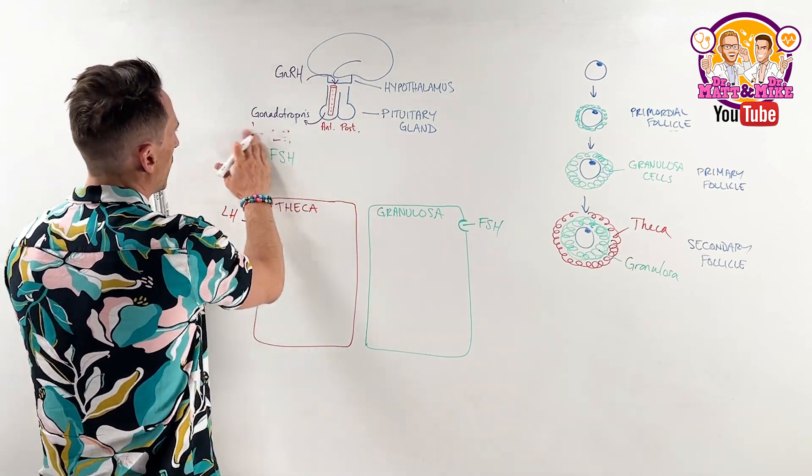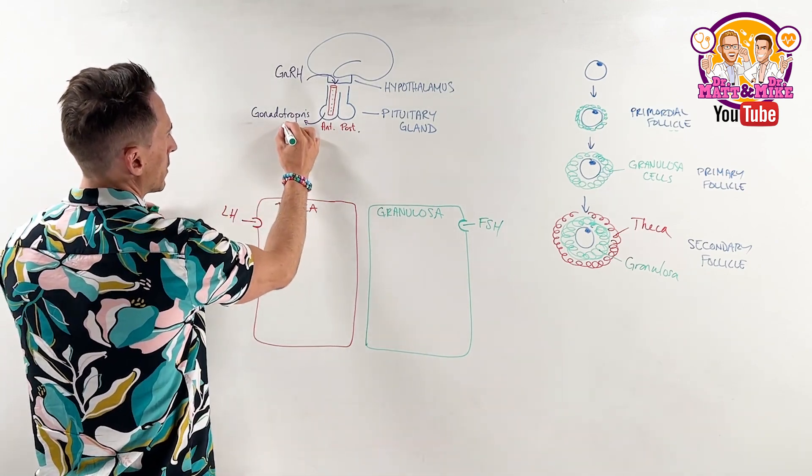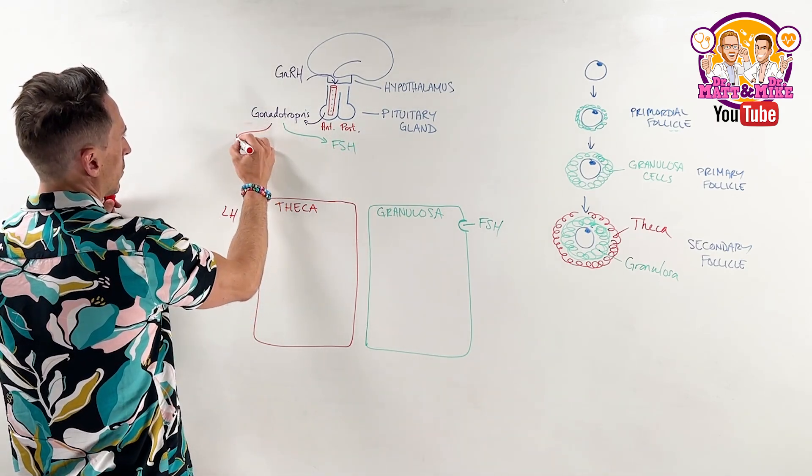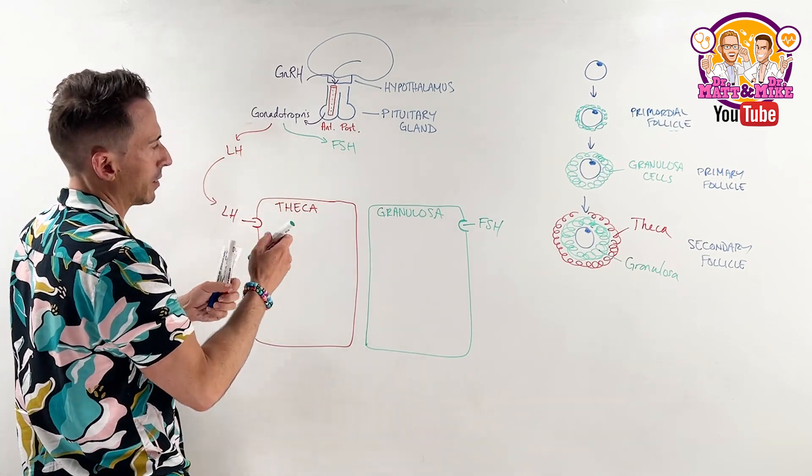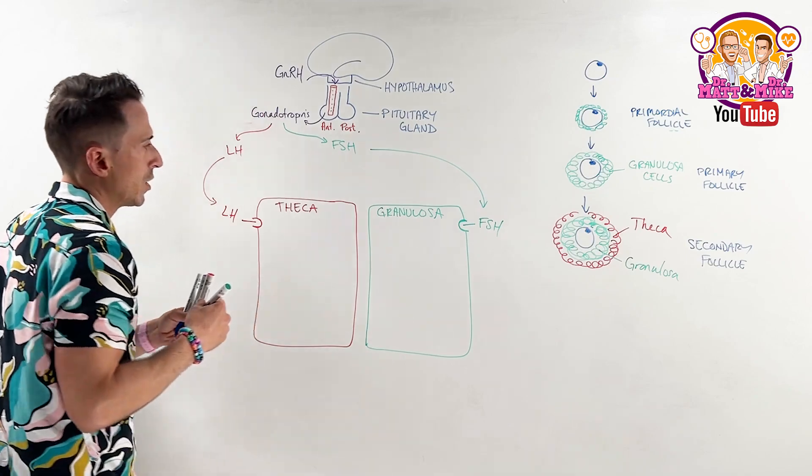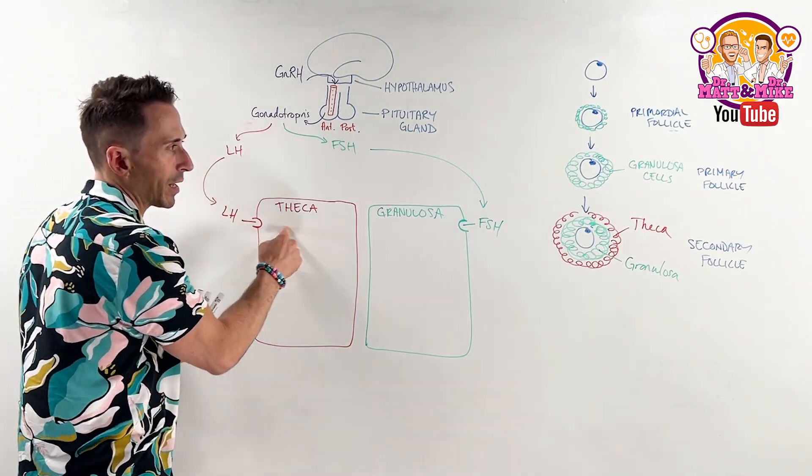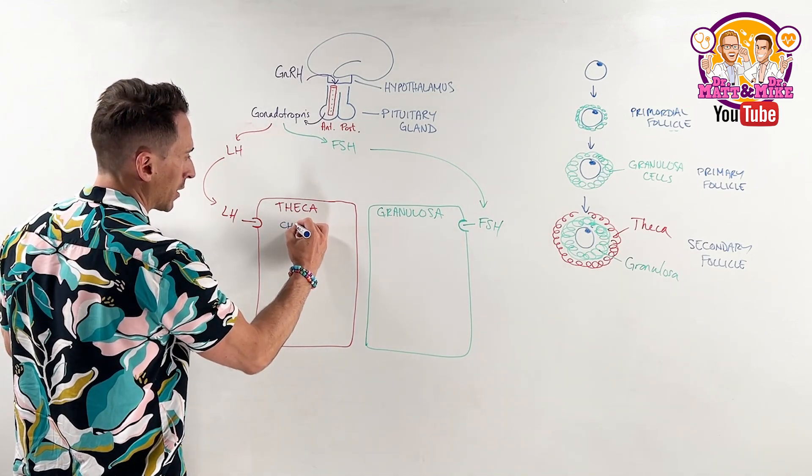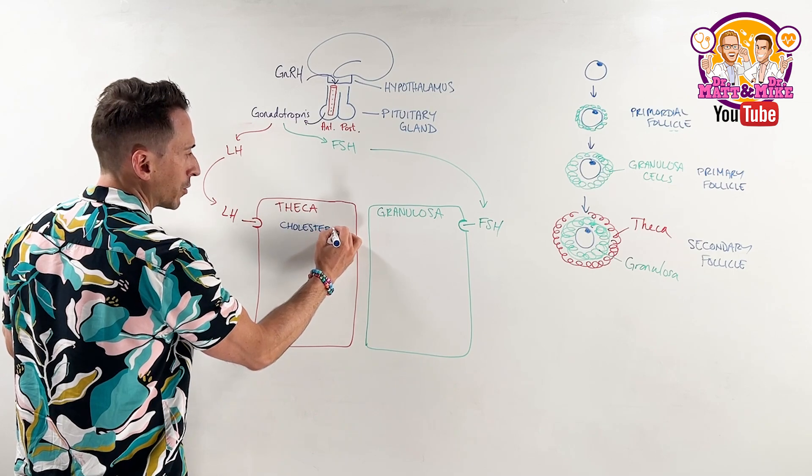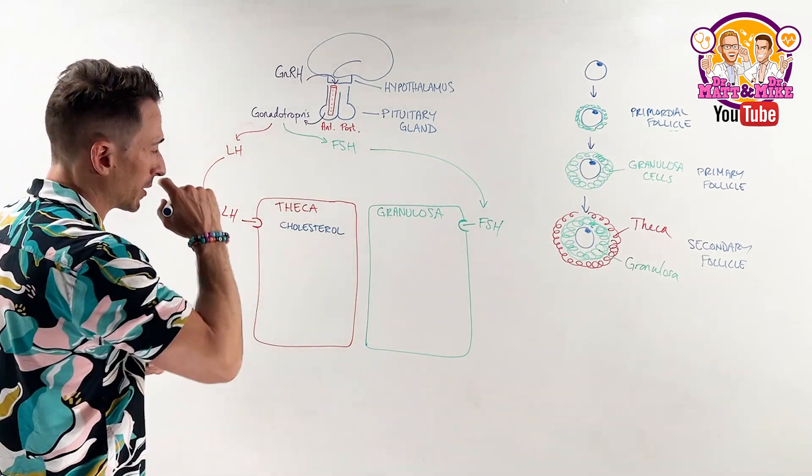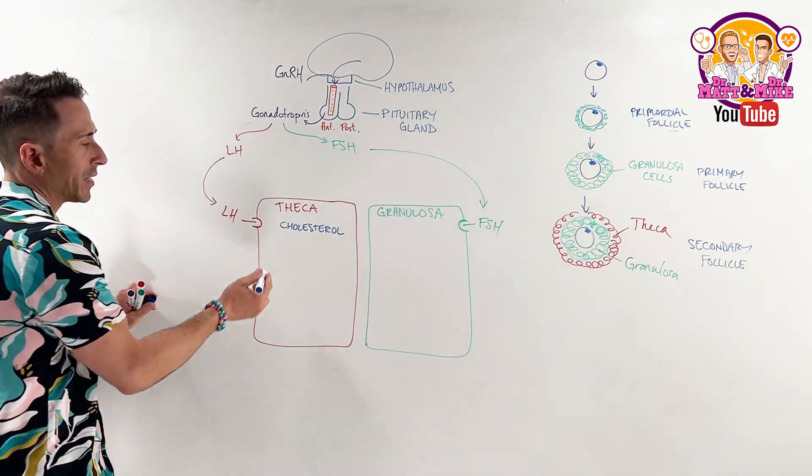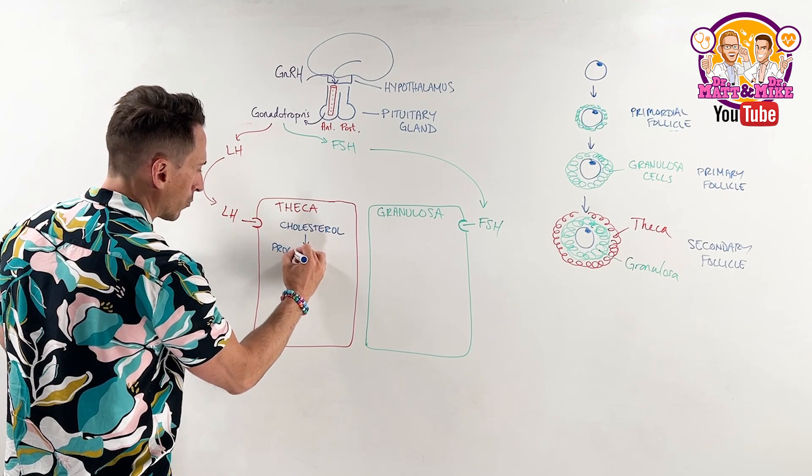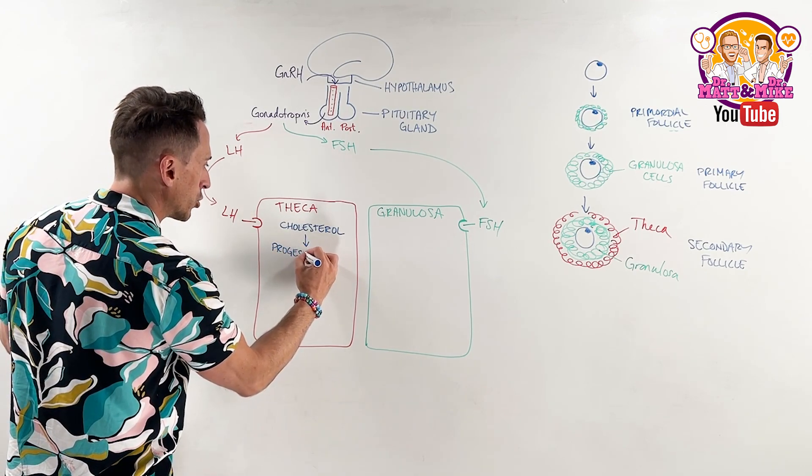And so we've got FSH and LH. If we were to draw it like this, just so it makes sense, FSH, LH, and then I can draw it like that. What happens is that, for example, luteinizing hormone will stimulate the theca cells. It stimulates the theca cells to take cholesterol, you've all heard of cholesterol before. Cholesterol is embedded within the cell membranes of all the cells of our body. It takes cholesterol and turns cholesterol into progestogens, progestogens.